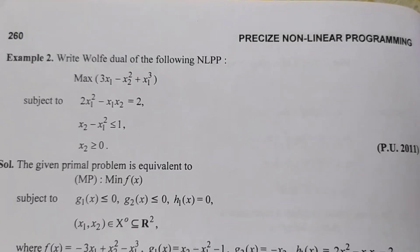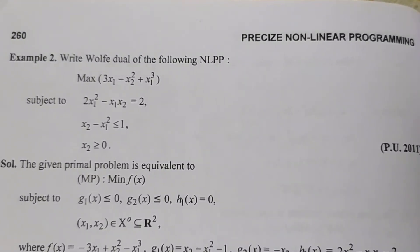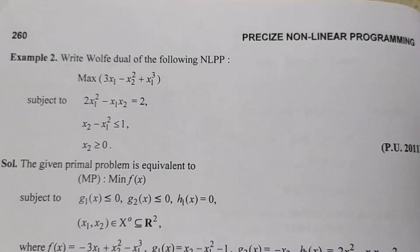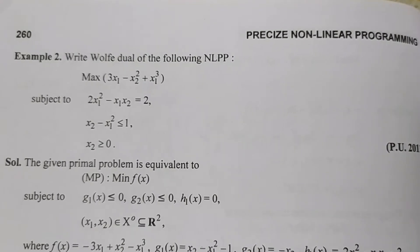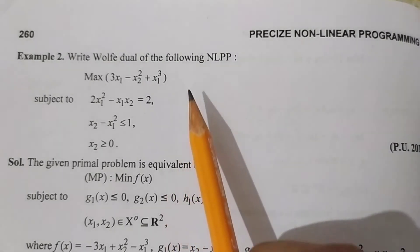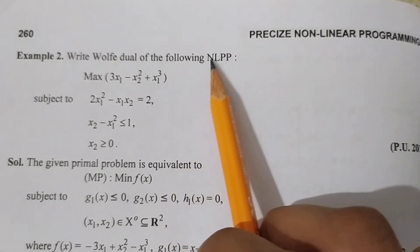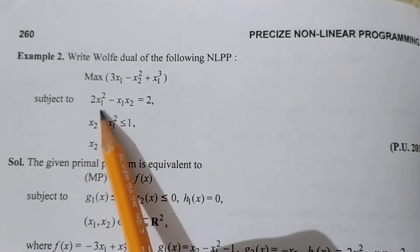Example 2. This example is the most important example for 8 marks. We will find the Wolfe dual of a non-linear programming problem.